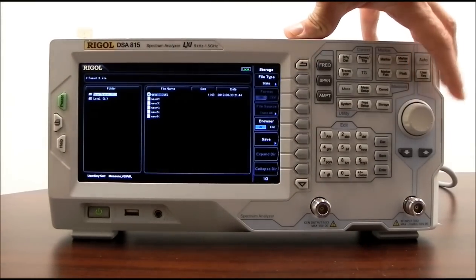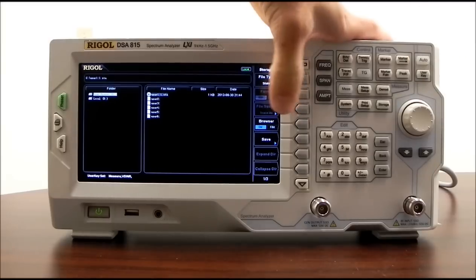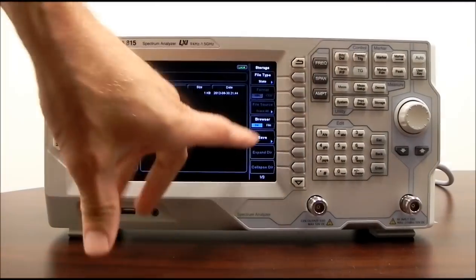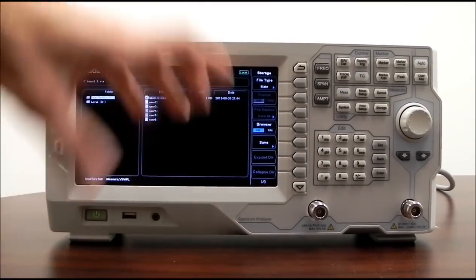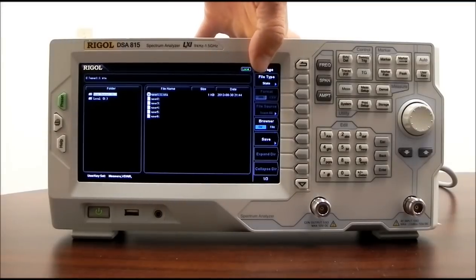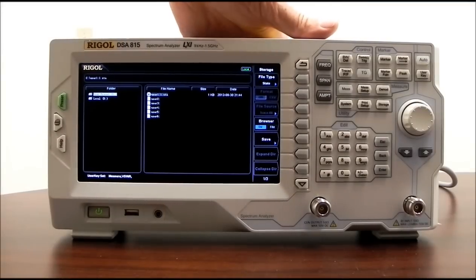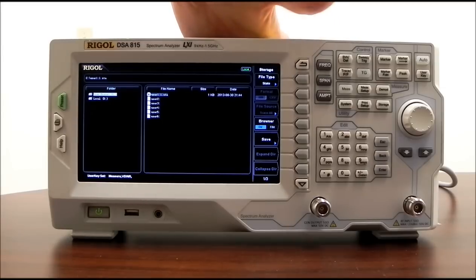We could also adjust the directory or the file type, and we have the ability to then save. If we're saving traces, we can save those in binary format, which is going to be used by the DSA to display the data, or as a CSV file, if you wanted to take that trace data offline and save that to an Excel spreadsheet or something similar.